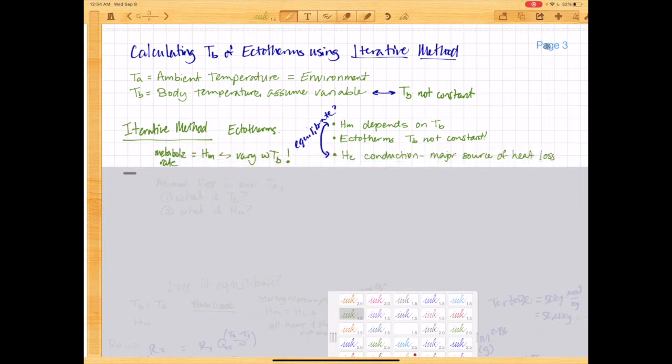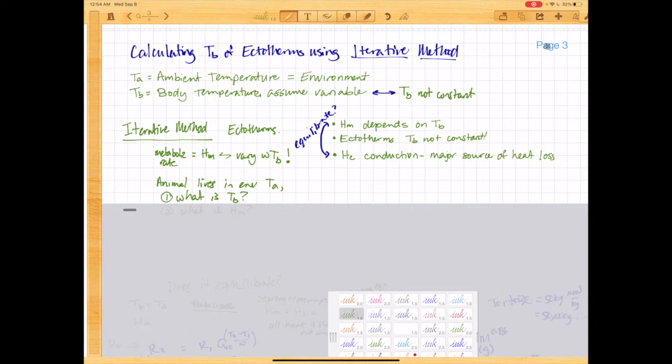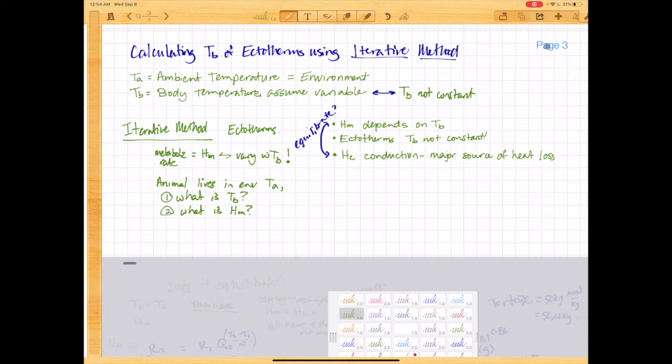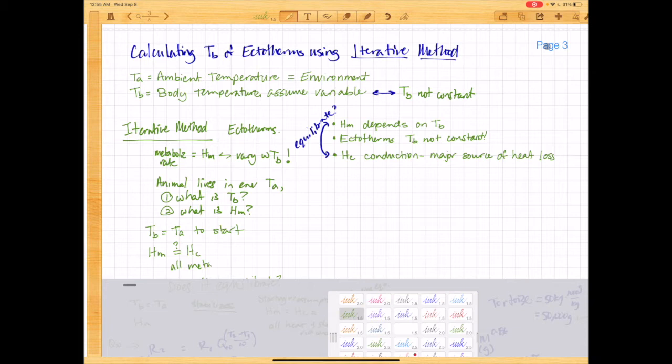So we start off with the metabolic rate. And we know that the animal lives in an environment with an ambient temperature, TA. So the questions are, what is this animal's body temperature? And what is the heat of metabolism at that body temperature? So we start off with the simple assumption that TB equals TA to start. And then we can assume that HM and HC balance.